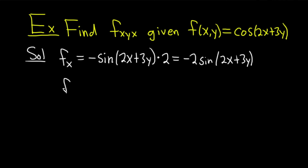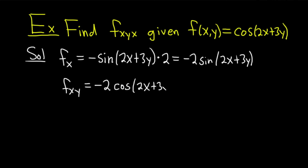Now we find fₓy by differentiating fₓ with respect to y. We have −2·sin(2x + 3y); the −2 hangs out. Differentiating sine gives cosine, and using the chain rule we multiply by the derivative of the inside with respect to y: the derivative of 2x is 0, and the derivative of 3y is 3. So 3 times 2 is 6, giving us fₓy = −6·cos(2x + 3y).